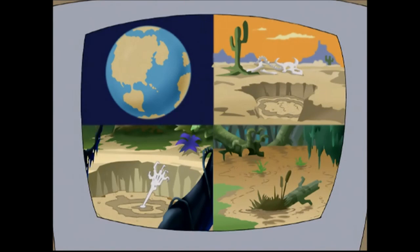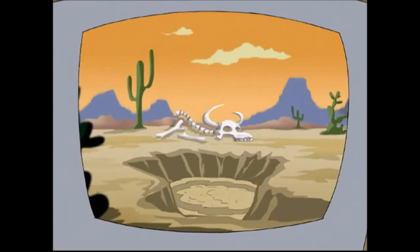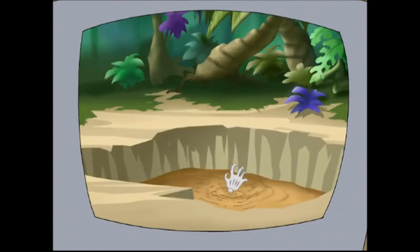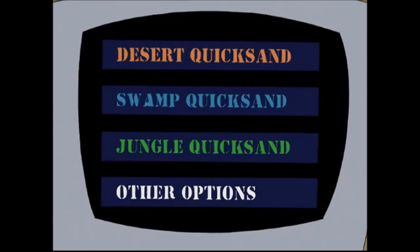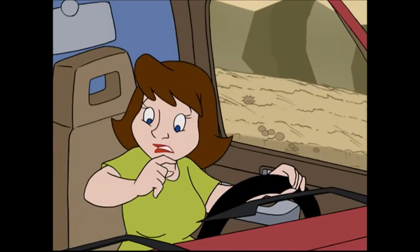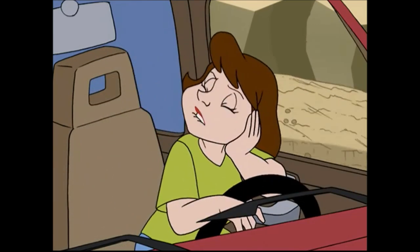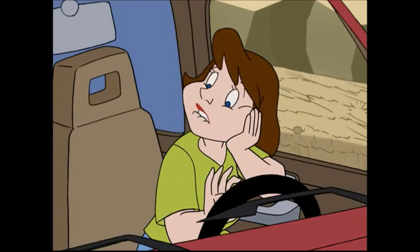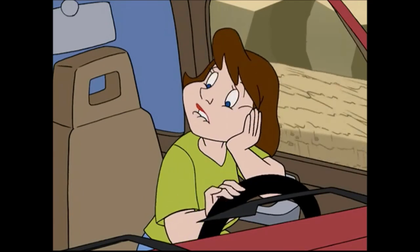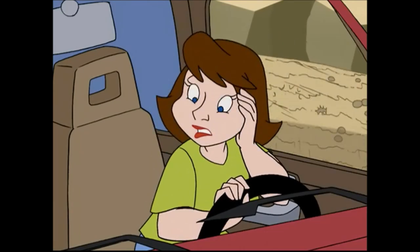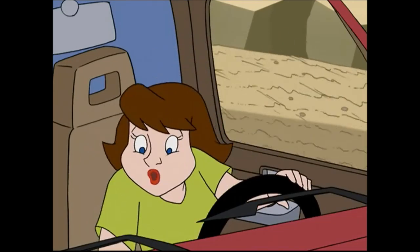There are many types of quicksand on our interesting planet. There is desert quicksand, swamp quicksand, and jungle quicksand. You have selected jungle quicksand. Now, please choose the jungle you are in. Are you in A, the Belgian Congo, B, a Southeast Asian jungle, or C, the Amazonian jungle? Amazonian, yeah.